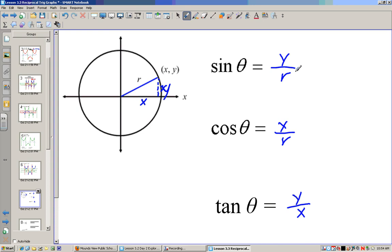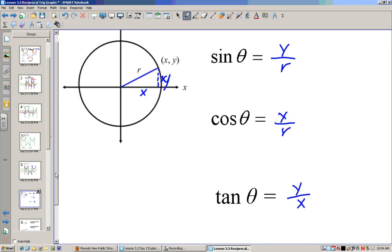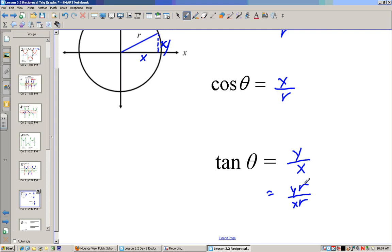Now do you see a relationship between these? One thing that you could notice is that tangent is y over x, which is the same thing as y r over x r, which is kind of something weird to say, but we could say that because r divided by r would cancel out, so these two are equivalent.